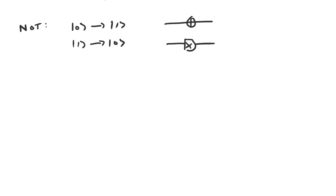I should point out that quantum gates are modeled by linear transformations. So knowing what the NOT gate does to the state |0⟩ and the state |1⟩ tells us what it does to all other states as well. Now quantum gates are actually more specific than just linear transformations — they are unitary transformations. Among other things, a unitary transformation has an inverse, which means that all quantum gates are reversible. If we know what state the qubit is in after going through the quantum gate, we can figure out what state it was in before.